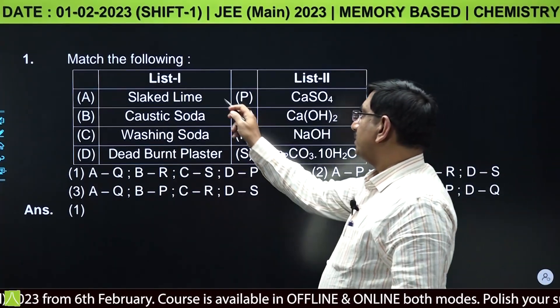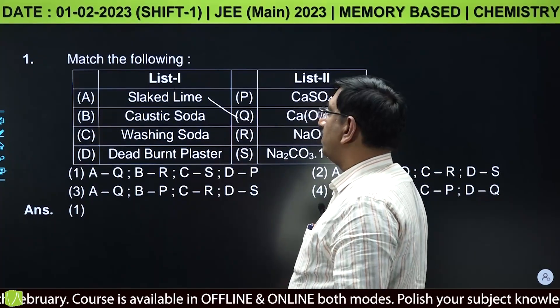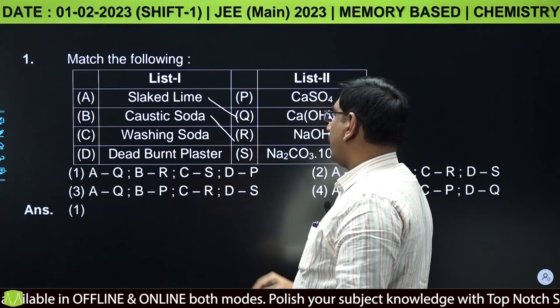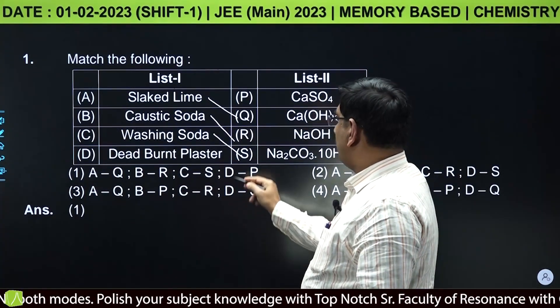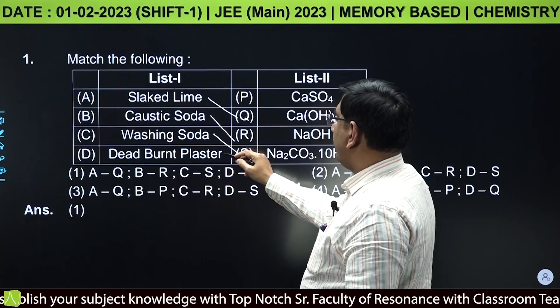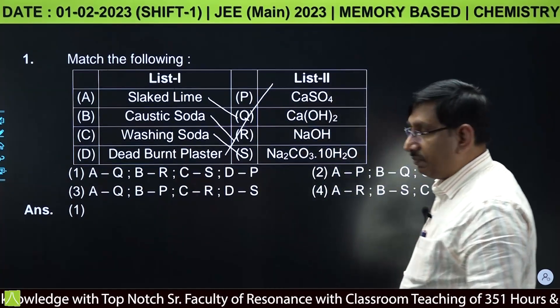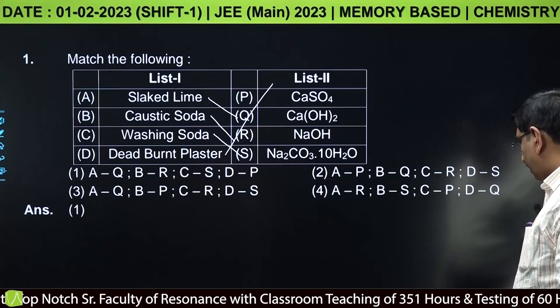Slaked lime is nothing but calcium hydroxide. Caustic soda is sodium hydroxide. Washing soda is sodium carbonate·10H2O, and dead burnt plaster is anhydrous calcium sulphate.